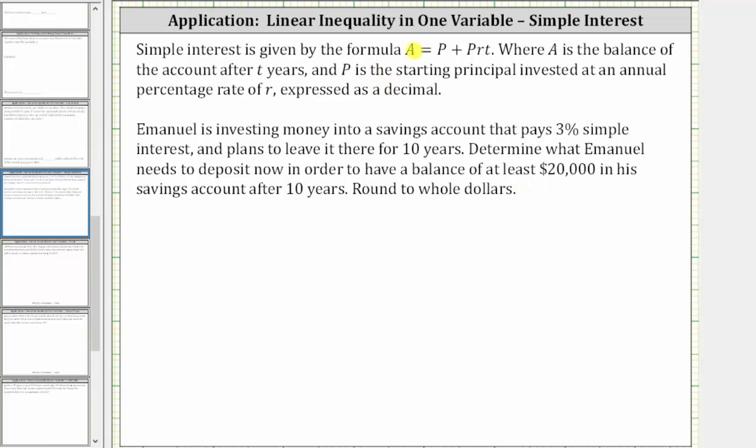For the simple interest formula, A, the amount after 10 years, needs to be at least $20,000. P, the principal or starting amount is unknown. R, the annual interest rate as a decimal, is 0.03 for 3%, and T is 10 for 10 years.